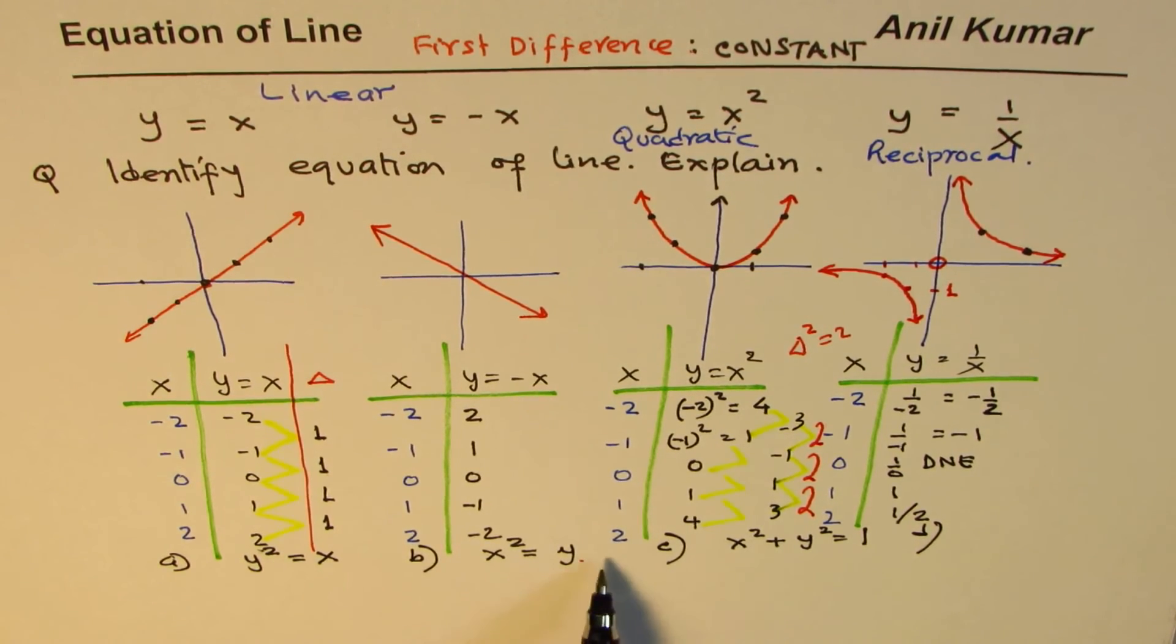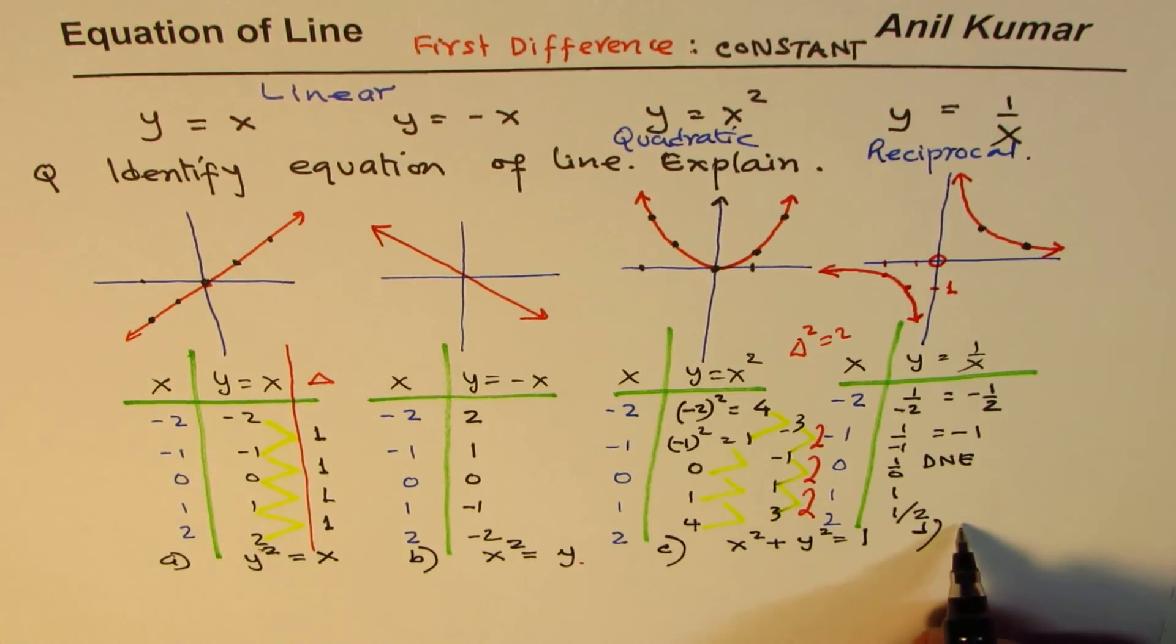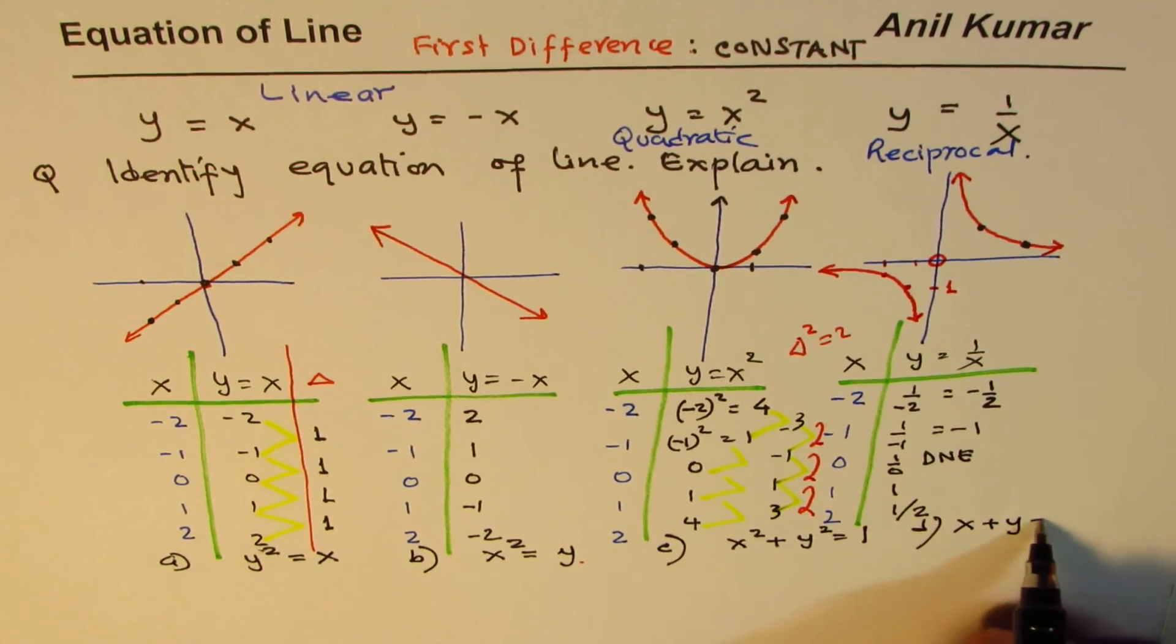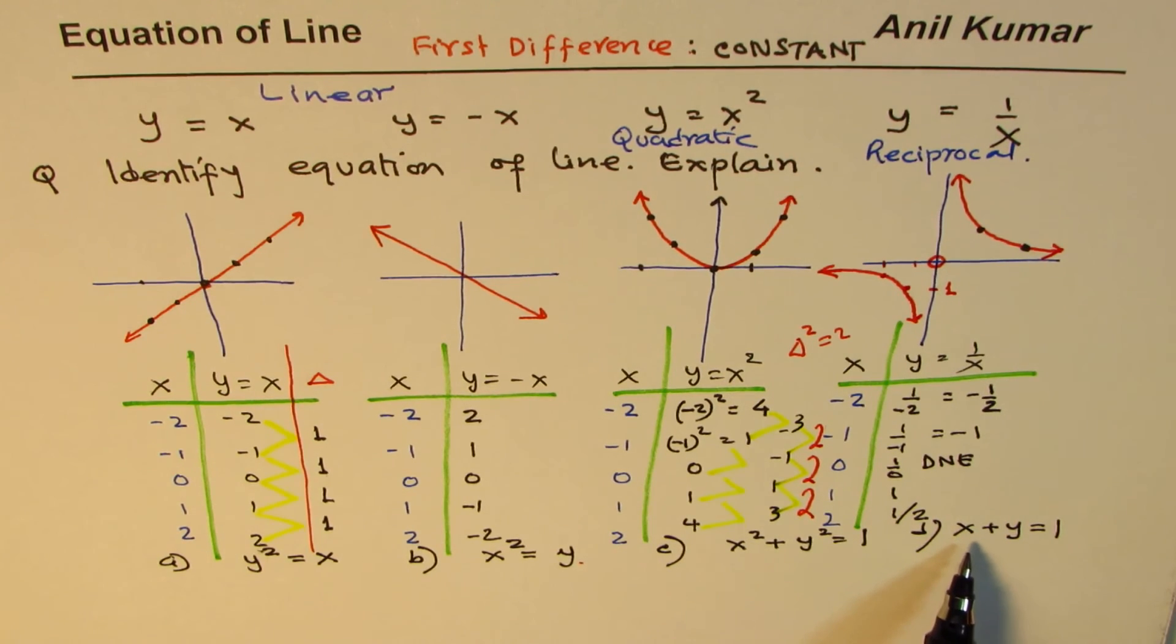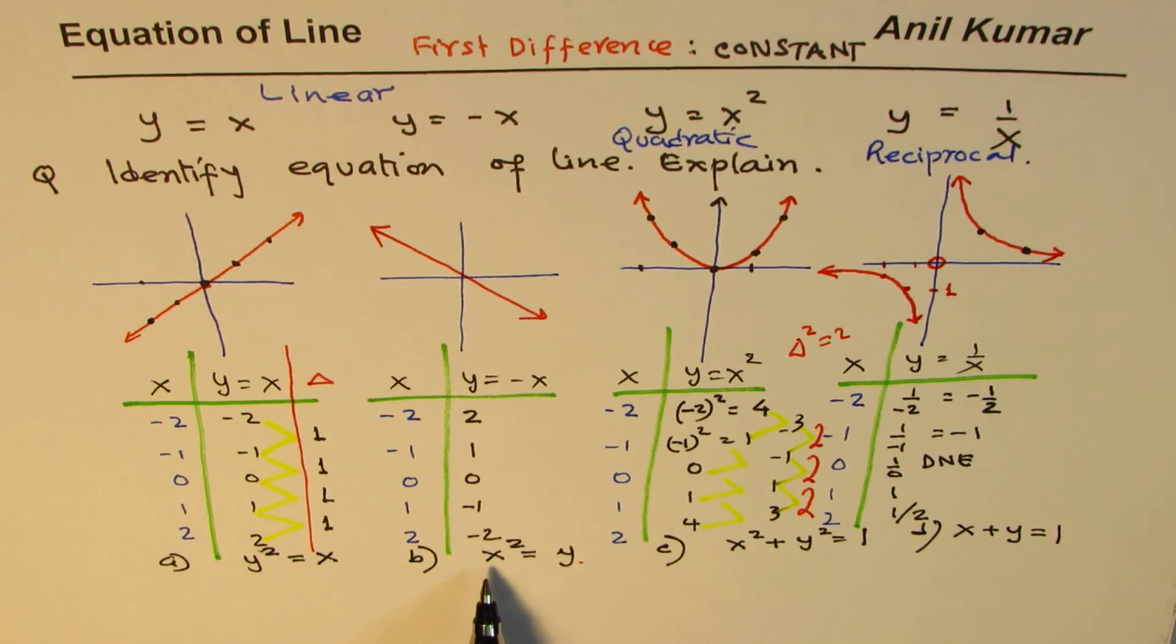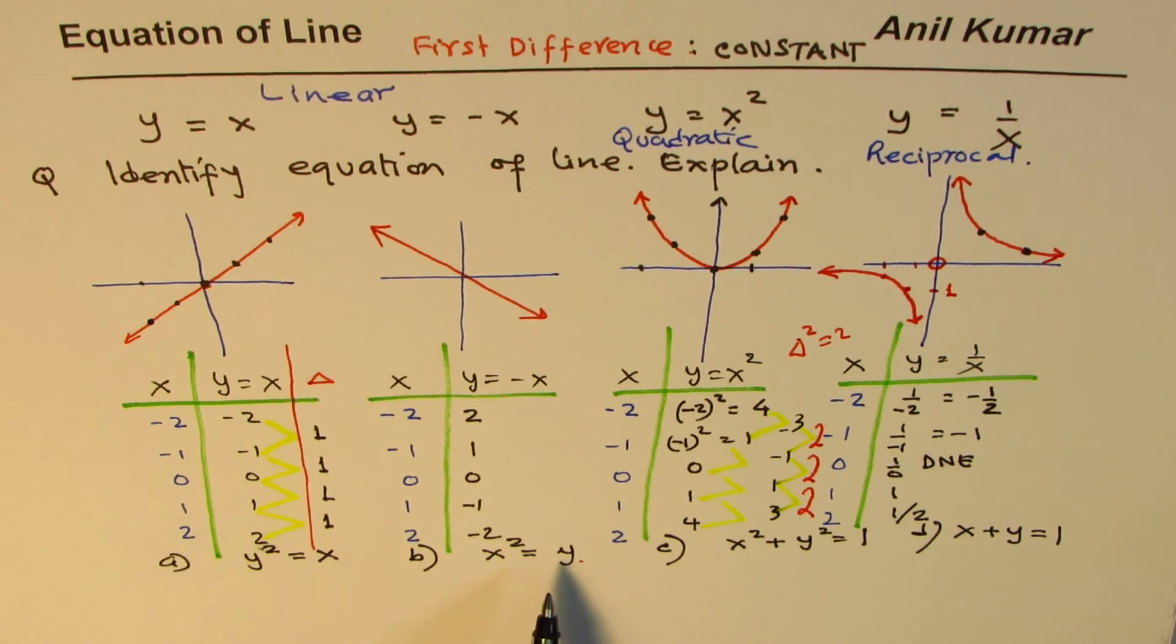Well, in these equations, you will see none of them represent a line. But if I write X plus Y equals 1, here the power of X and Y, this kind of 1, it will represent a line. So if you have to identify from a set of equations, good rule of thumb is that X and Y do not have those powers. They are linear, so we are talking about just degree 1.